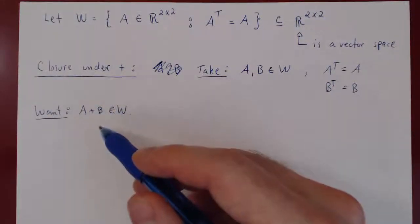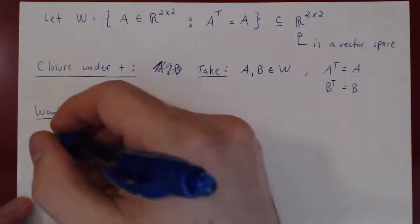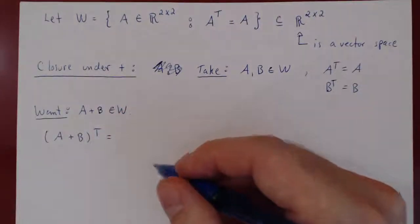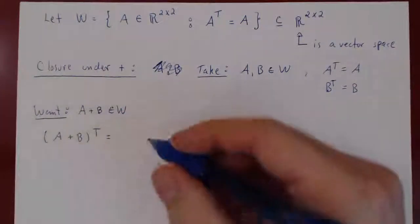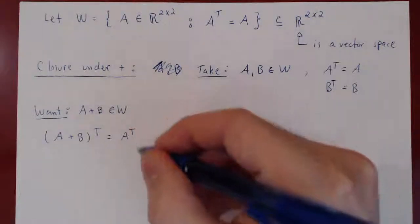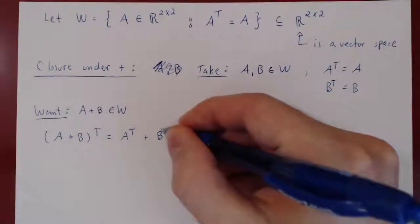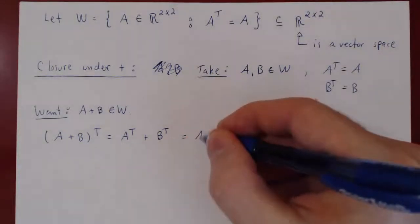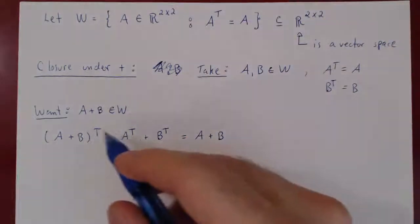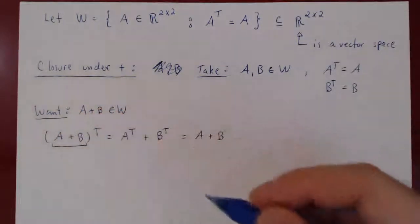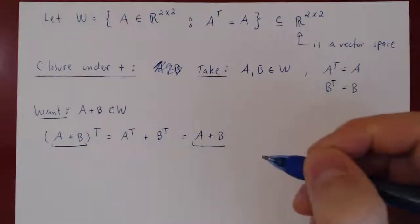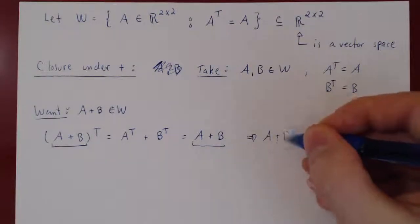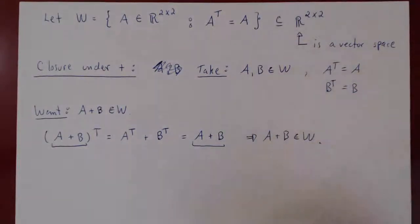Now we show A plus B is also symmetric. A matrix is symmetric if its transpose equals itself. By properties of the transpose, transposing a sum gives the sum of the individual transposes: (A+B)^T = A transpose plus B transpose. By assumption, A transpose equals A and B transpose equals B, so this equals A plus B. Therefore A plus B is symmetric, and A plus B is an element of W. We have closure under addition.